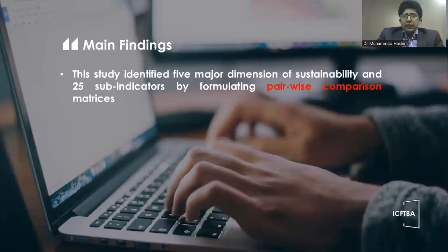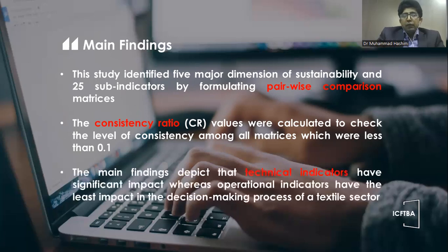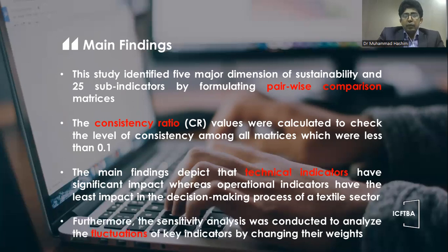The main findings of our study depict that five major dimensions of sustainability and 25 sub-indicators were identified by formulating pairwise comparison matrices. The consistency ratio values were calculated to check the level of consistency among all matrices, which were less than 0.1, showing that our results are acceptable. The main findings depict that technical indicators have significant impact, whereas operational indicators have the least impact in the decision-making process of the textile sector. Sensitivity analysis was conducted to analyze the fluctuations of key indicators by changing their weights.